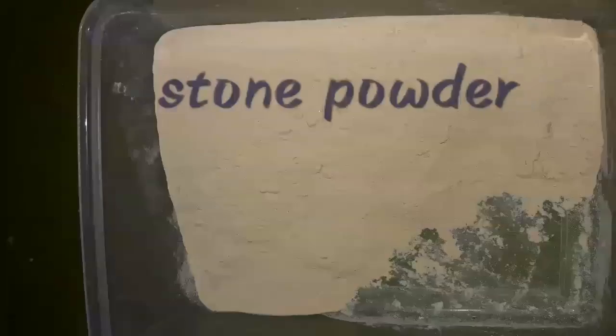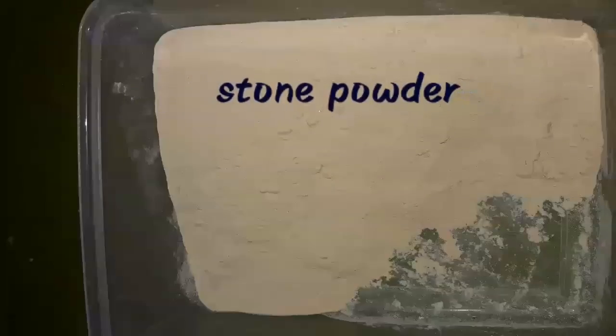This material is called stone powder. Stone powder is used after making a preliminary impression with alginate — we pour stone and make it into a cast. A stone cast is a replica of the impression.